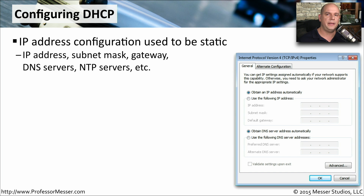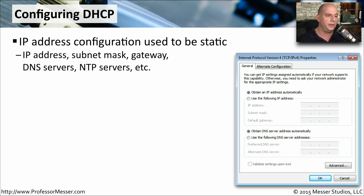In the early days of IP networking, all of these configuration settings had to be configured manually. We call this static addressing, where you go into the configuration of your computer and you add the IP address, the subnet mask, the default gateway, and the DNS server IP addresses, and anything else that's required for IP communication. Of course, if you're putting in all of these configuration settings by hand, you're bound to make a mistake. And if you have a lot of different computers, there's a lot of management overhead, because you have to go to every single computer to configure the IP address settings.